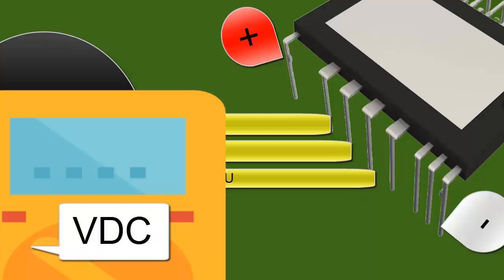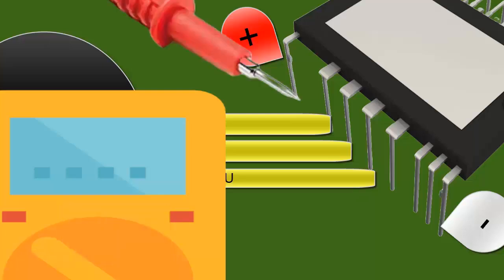Place the red probe of the multimeter on the positive power supply of the IPM electronic circuit. Place the black probe of the multimeter on the negative power supply of the IPM electronic circuit.